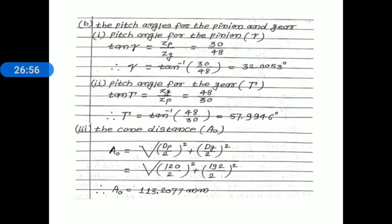Step B: pitch angles. Pitch angle for pinion γ: tan γ = zp/zg = 30/48. Taking tan⁻¹(30/48) gives γ = 32.0053 degrees.